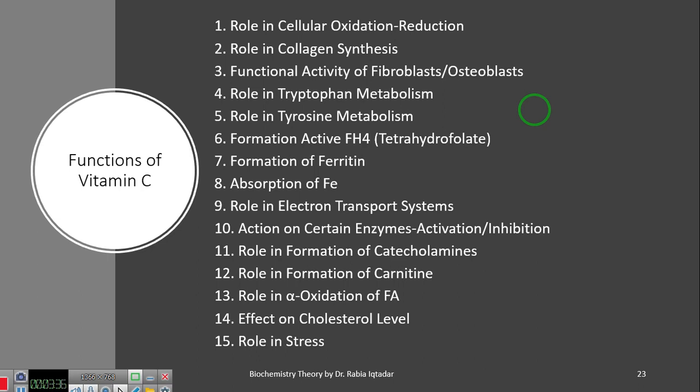It also has a role in tyrosine metabolism. In tyrosine metabolism, vitamin C is required as a co-factor for catabolism in liver. Formation of active tetrahydrofolate. Tetrahydrofolate is important for maturation of red blood cells. So vitamin C is a co-factor of that process as well.